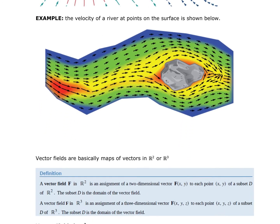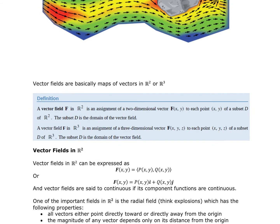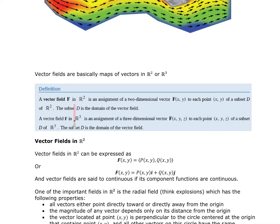When we're looking at vector fields, we're basically looking at maps of vectors in R2 or R3. A vector field F in R2 is an assignment of two-dimensional vectors F(x,y) to each point (x,y) of a subset D of R2, and that subset D is the domain of the vector field. Similarly, a vector field F in R3 is an assignment of three-dimensional vectors F(x,y,z) to each point (x,y,z) of a subset D in R3.